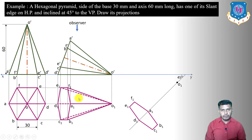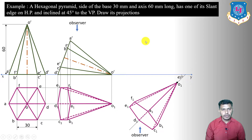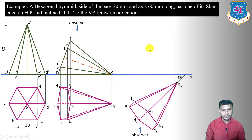Now draw the final front view by projecting from the third-stage top view in the direction of the observer. Draw loci from the second-stage front view: locus of A', locus of B'/F', locus of C'/E', and the XY line as locus of D and O.